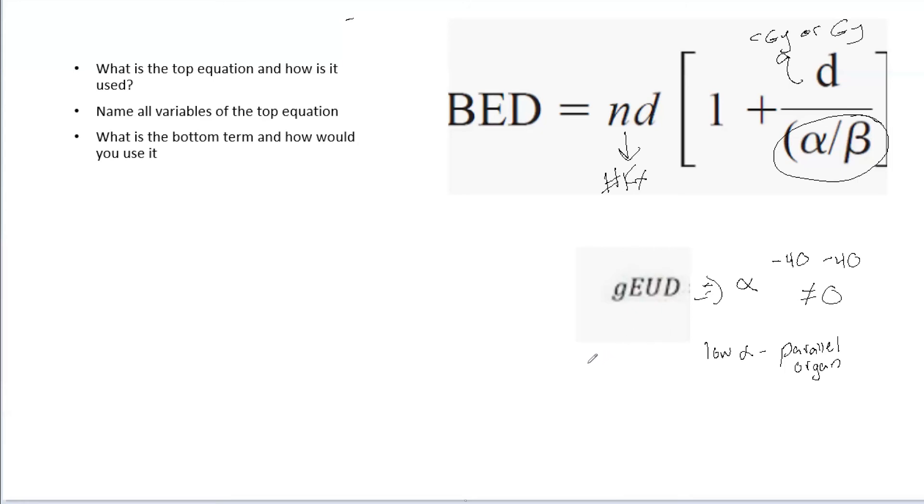So for example, for gEUD, your alpha for the PTV, this may be equal to something like a negative 10. Whereas your parotid, because it is a parallel organ, you have a couple of those, that may be equal to one. The chiasm, for example, that could be something like 16.